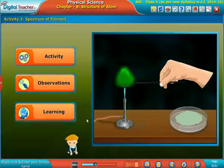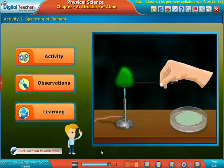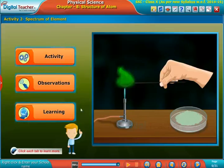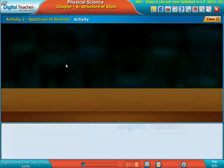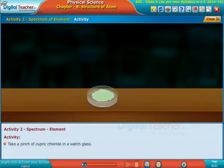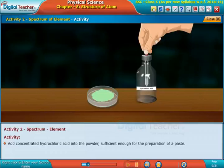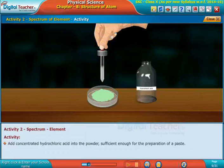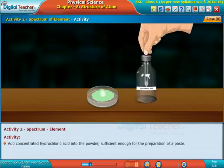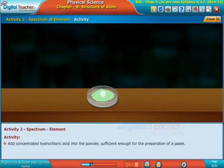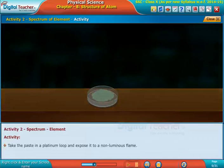Spectrum of element. Click each step to learn more. Take a pinch of cupric chloride in a watch glass. Add concentrated hydrochloric acid into the powder, sufficient for the preparation of a paste. Take the paste